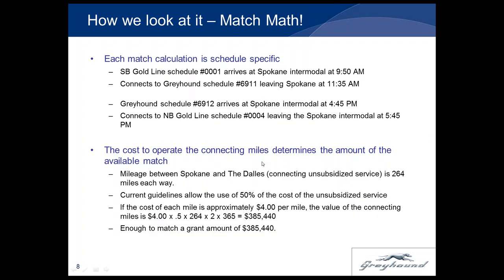Each match calculation is schedule specific. The southbound Gold Line Schedule 1 arrives at the Spokane Intermodal at 9:50 a.m. and connects to Greyhound Schedule 69-11 leaving Spokane at 11:35. Greyhound Schedule 69-12 arrives at Spokane at 4:45 p.m. and connects to the Gold Line North at 5:45 p.m. Each of these connections is less than two hours.